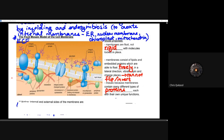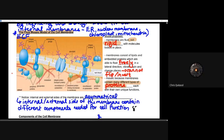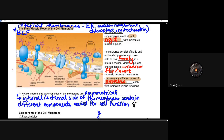When we talk about the fluid mosaic model, we're talking about the fact that the cellular membrane is not rigid and it can move, and it's made up of many different proteins. Those are the two main things you need to know about the fluid mosaic model. Notice that the internal and external sides of the membrane are asymmetrical — the inside will contain different components needed for cell function compared to the outside. The extracellular fluid, or ECF, doesn't have the same things that the cytosol has.